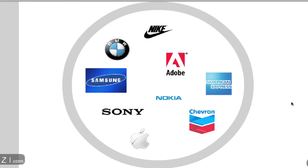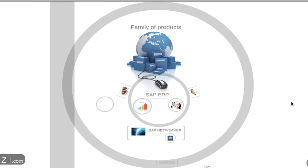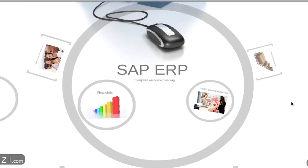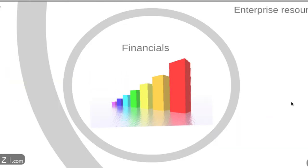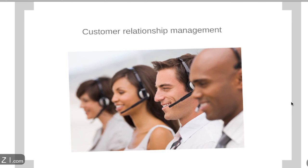SAP has a family of products that help to optimize business processes. The main goal of SAP software solutions is to make a company more efficient, more productive, and in turn more competitive in the marketplace. The core offering of SAP is called SAP ERP — ERP stands for Enterprise Resource Planning. ERP is used to plan a company's resources, be it humans or products. Examples within SAP ERP include SAP Sales and Distribution and SAP Financial.